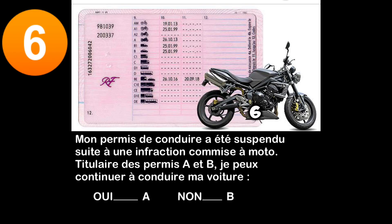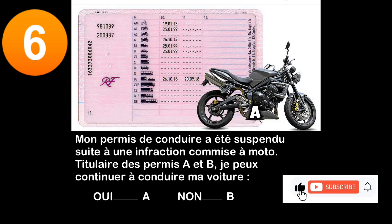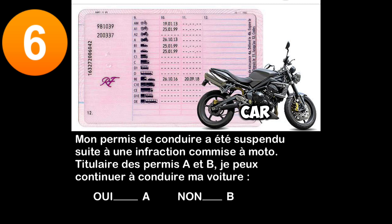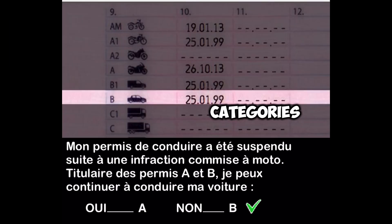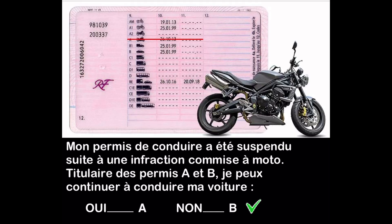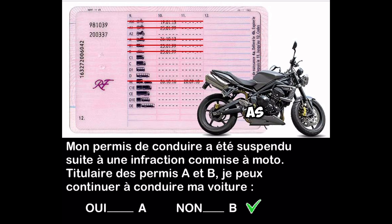Question six: my driver's license was suspended following a motorcycle offense. As a holder of both A and B licenses, can I continue to drive my car — yes or no? Each driver has only one driver's license that can have several categories: category B allows driving a car, category A allows driving a motorcycle. If my license is suspended, all the categories it includes are also suspended. Therefore, if it is suspended as a result of a motorcycle offense, I will not be able to continue driving my car.